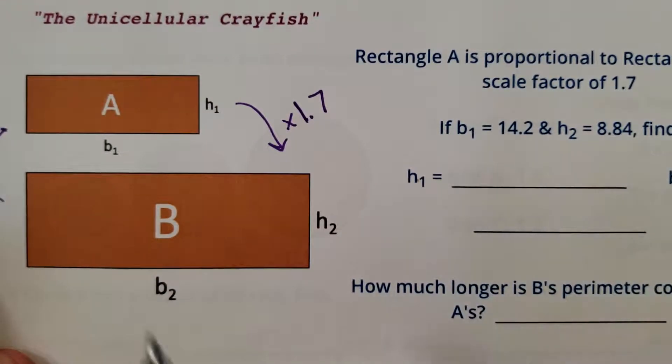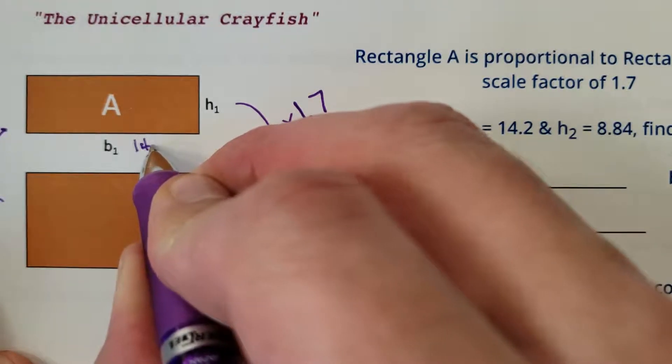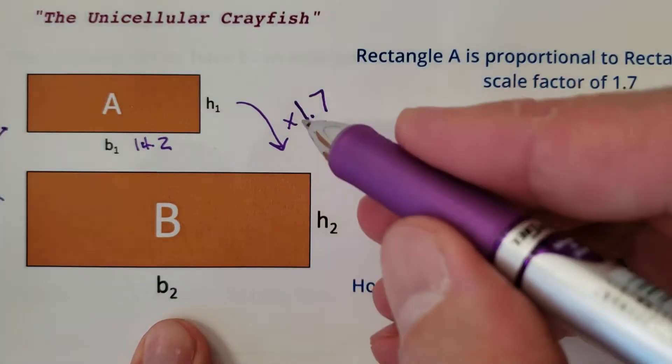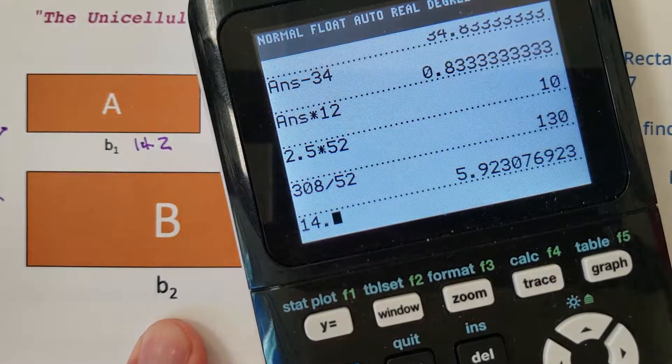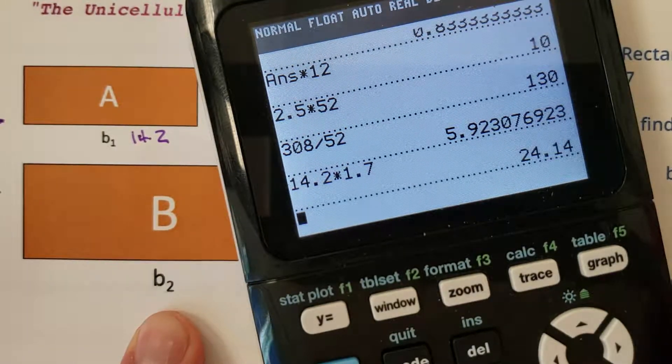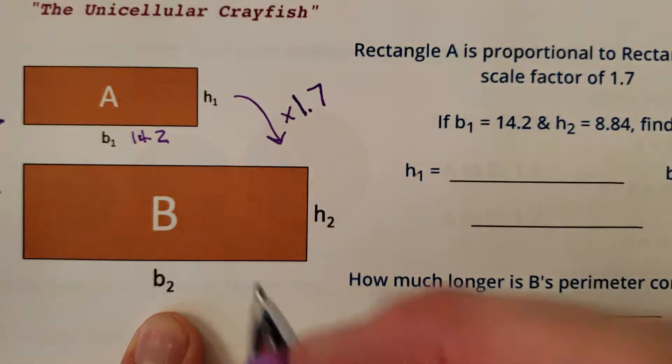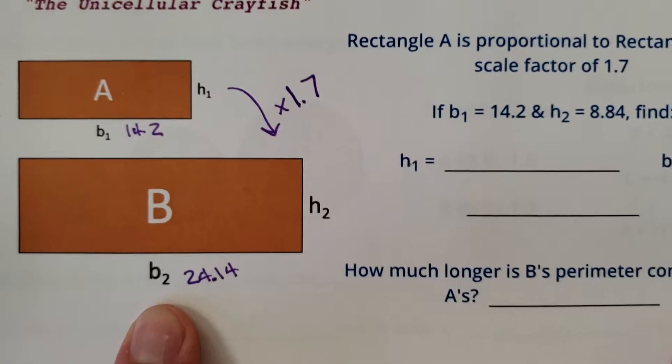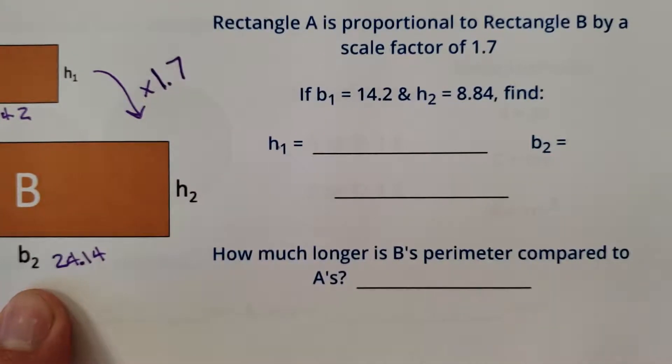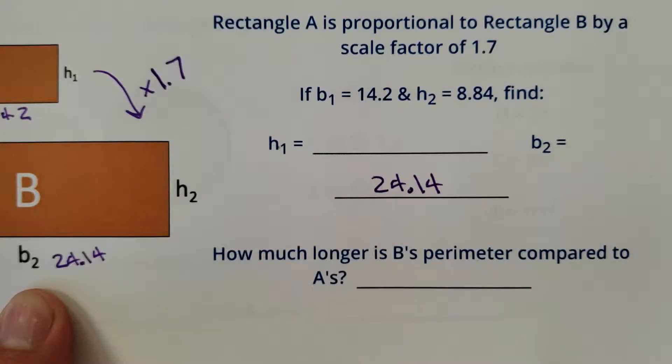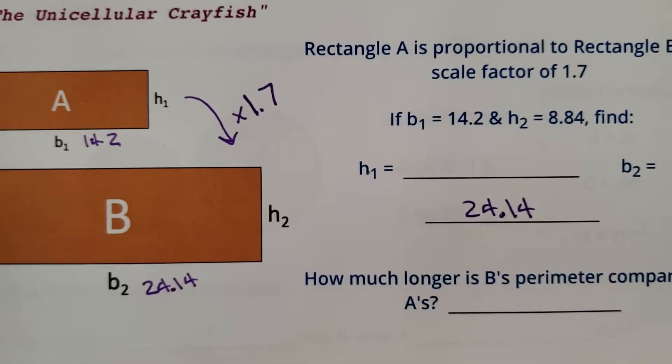So if B1 is 14.2, find B2. Oh, scale factor 1.7. That's easy. 14.2 times 1.7 is 24.14. I'm going to use all the numbers. 24.14. So 24.14. Where are you at? There you are. 24.14. I don't have any instructions that say round, but that's not that bad of a decimal. Include it all.